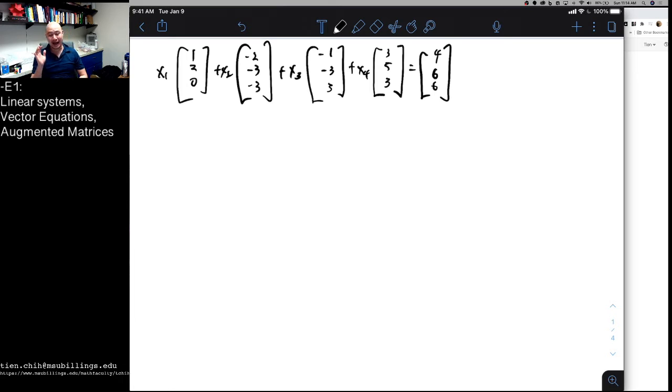So to start with, I have a vector equation written here. We have a linear combination of four vectors on the left, x1 vector plus x2 vector, x3 and x4, is equal to some vector on the right.